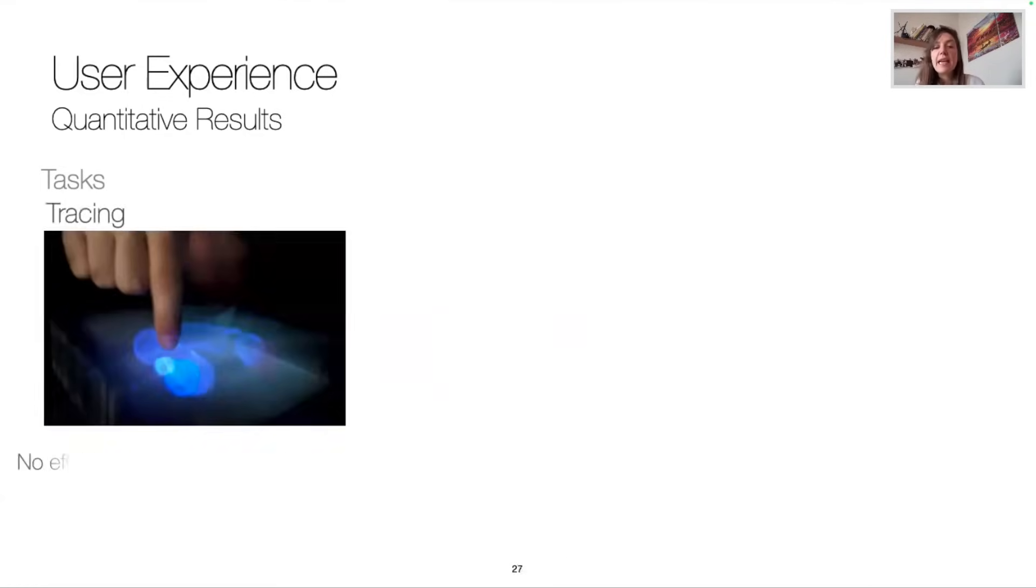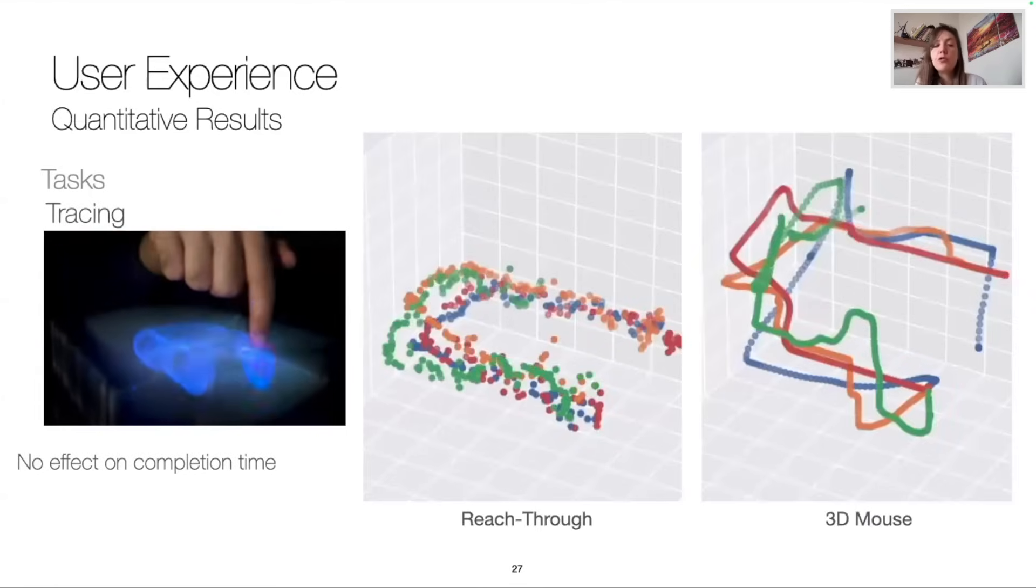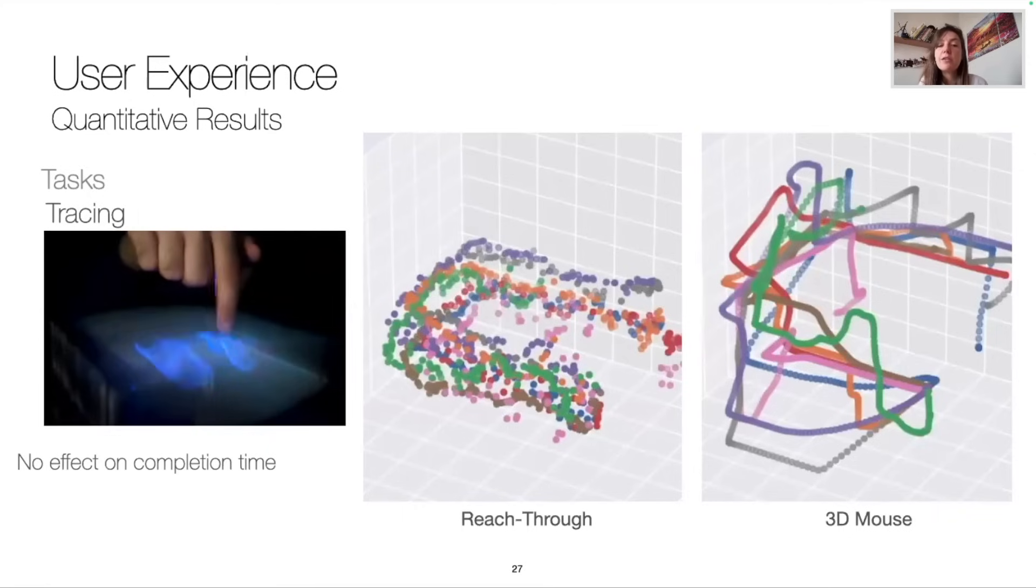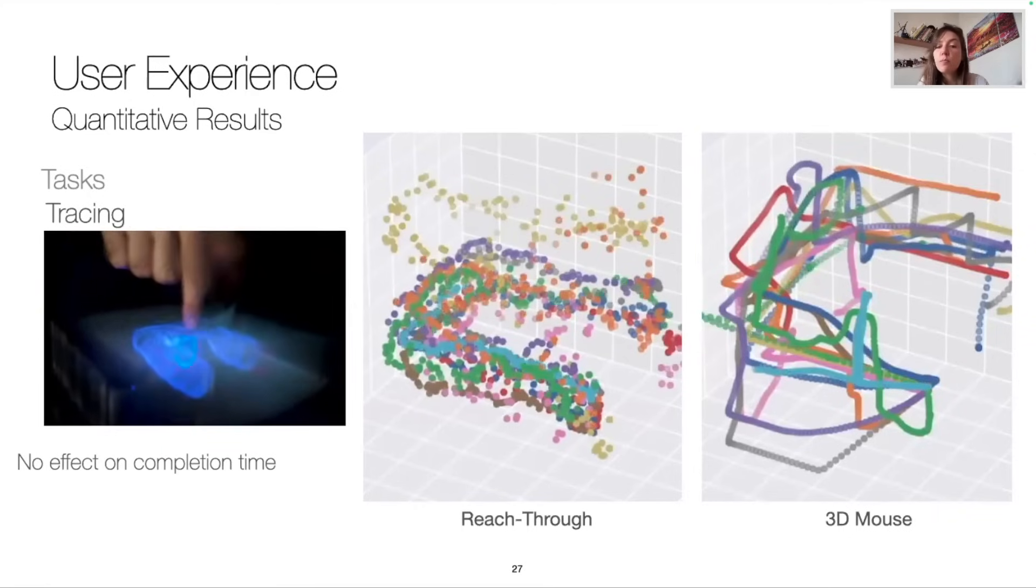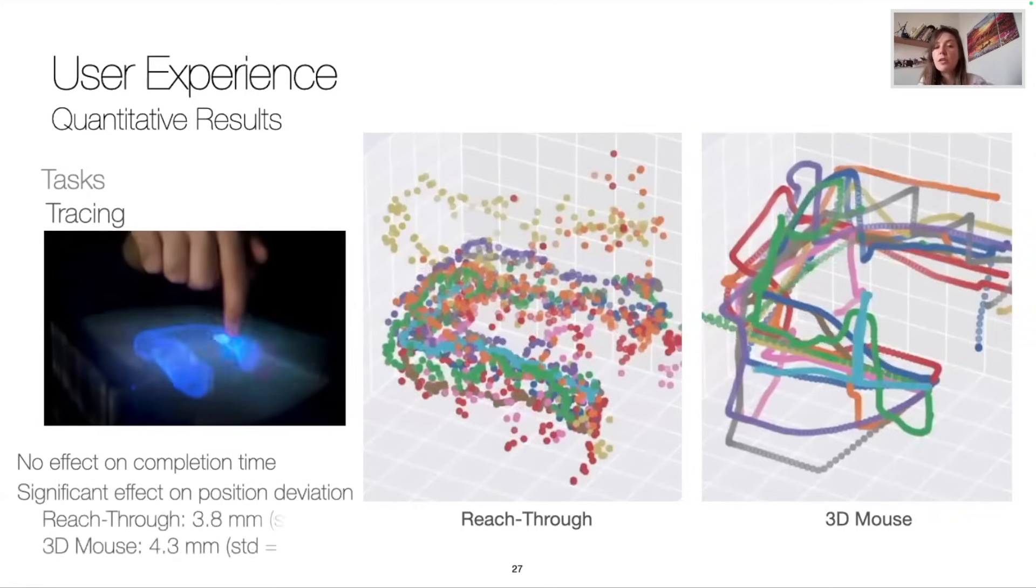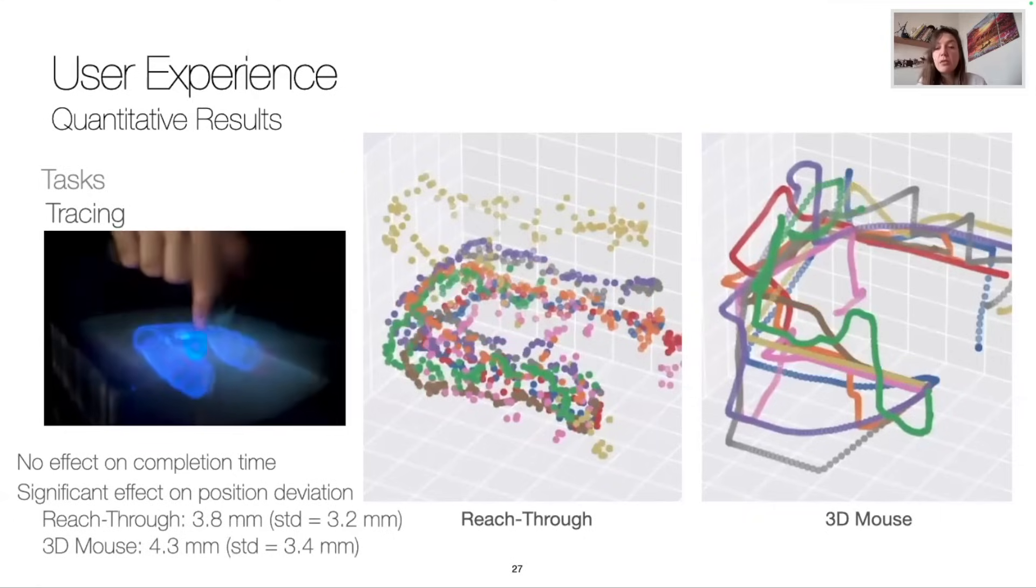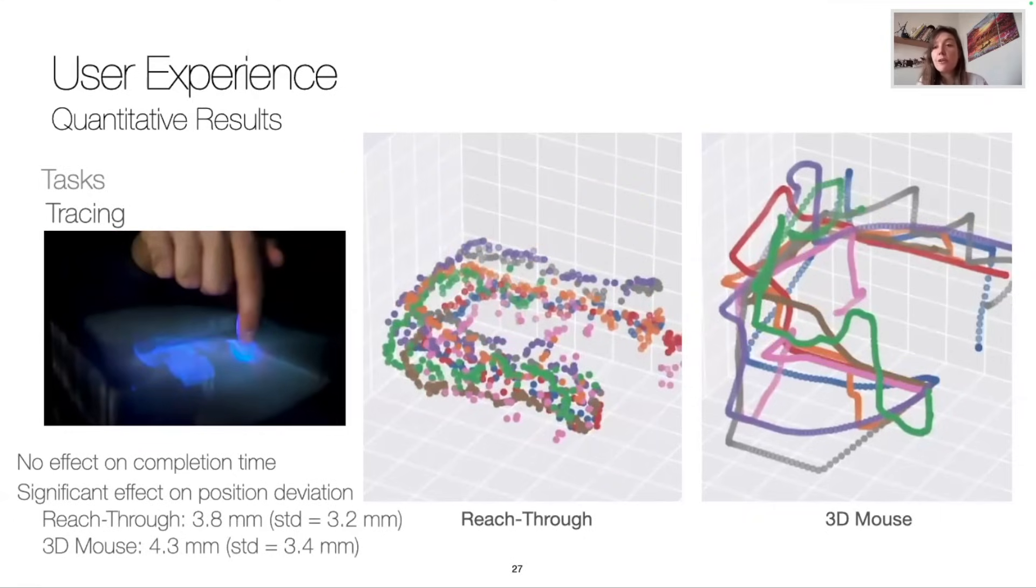For the tracing task, no effect was noted for completion time. But, as we note from the animation here, when reaching through, the participants followed quite accurately the circuit, leading to a smaller position deviation, the closest distance from the cursor to the circuit. Reach-through showed significantly better results.